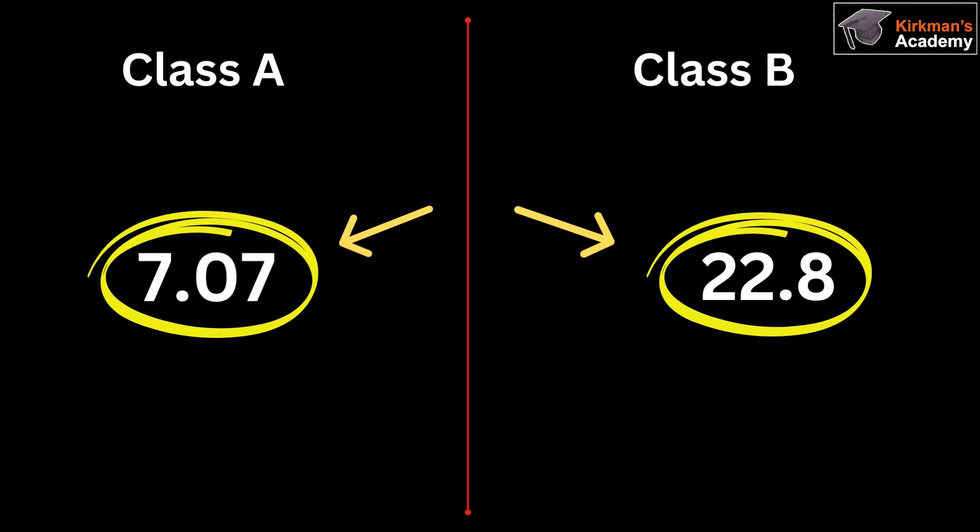We then compare the two results and see that the standard deviation of Class A is 7.07 and Class B is 22.8. We can clearly see that compared to Class A, Class B is much higher.